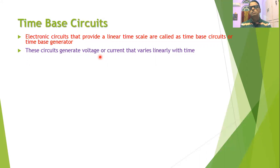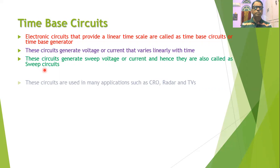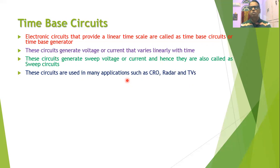This voltage is also called the sweep voltage or ramp voltage. These circuits are used to generate the sweep voltage, or sometimes they generate the sweep current, and therefore these circuits are called sweep circuits or ramp circuits. These circuits are very popular and are used in many applications such as cathode ray oscilloscopes, radar, and television screens. Whenever we want to achieve a horizontal motion of the electron beam on the screen of the CRO, radar, or television, these time-based circuits are used.